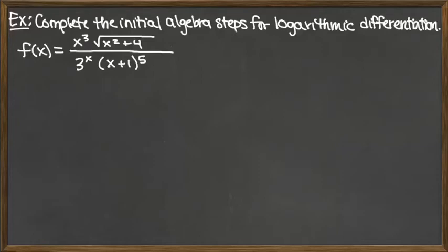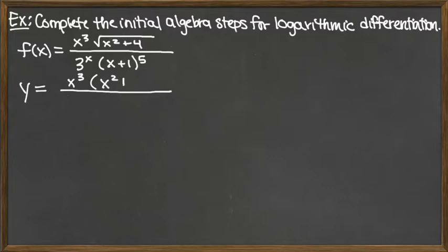To complete the initial algebra steps for logarithmic differentiation, first we rewrite the function f of x as y equals. We see that this function has a square root in it, so we want to go ahead and rewrite that square root as the one-half power. There's nothing else that needs to be altered before we begin.